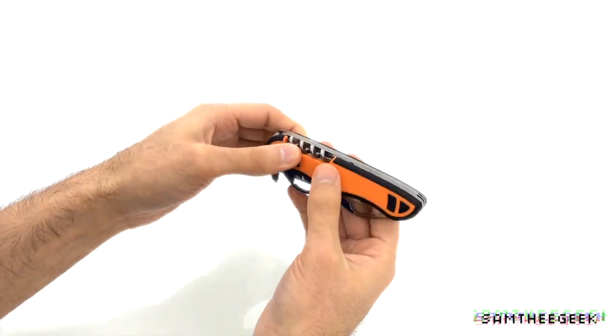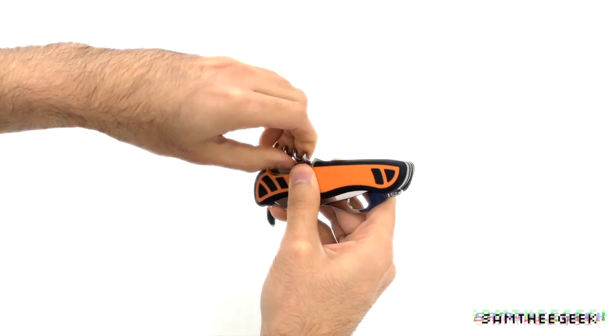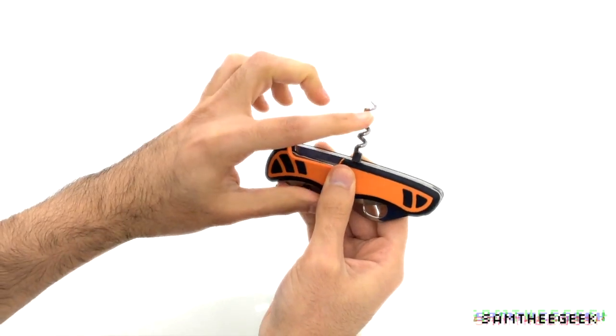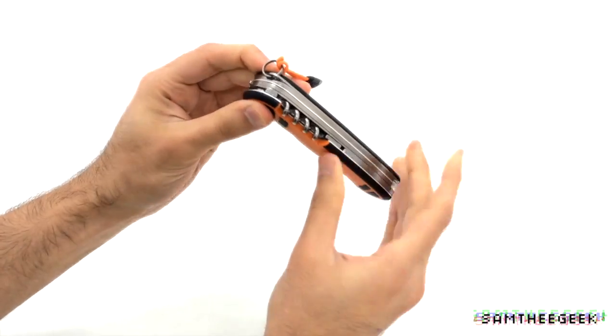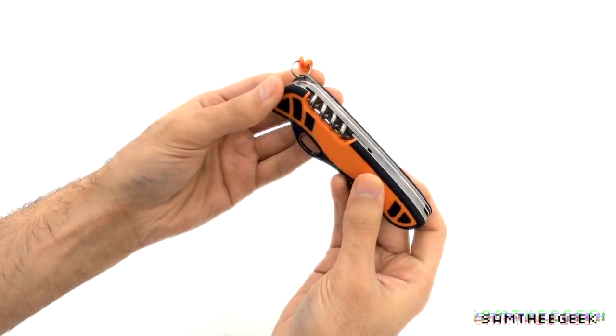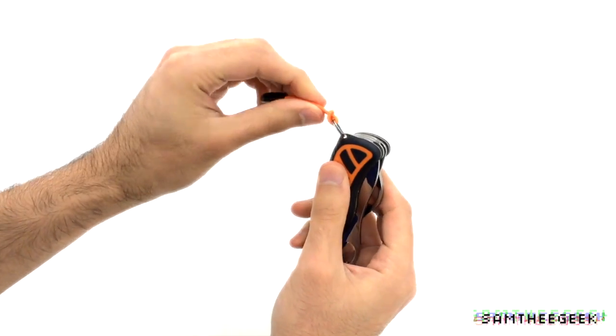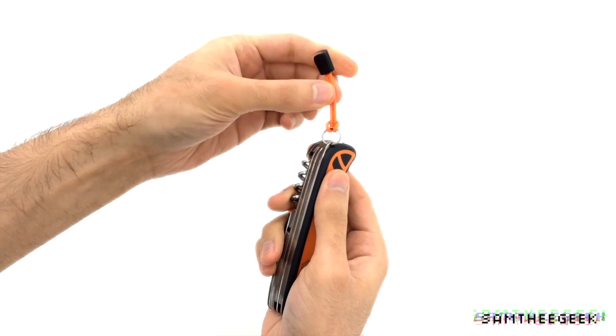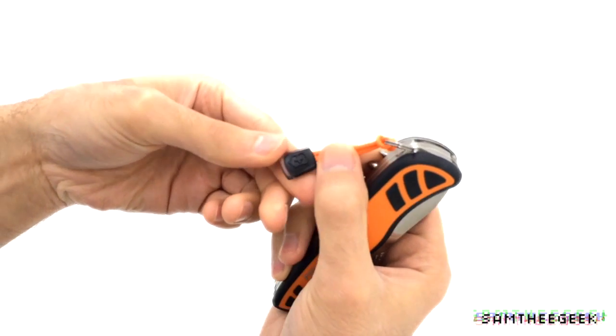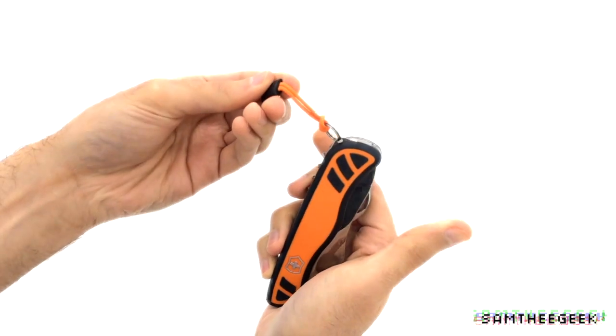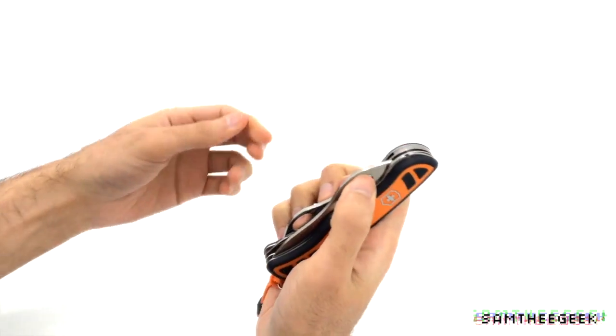So let's see what do we have here, what kind of tools do we have in this Victorinox knife, Swiss Army? We got a corkscrew, nothing else. It doesn't look like there is anything else here. And we got a nice looking strap or lanyard with a Victorinox logo right here, pretty cool, awesome.